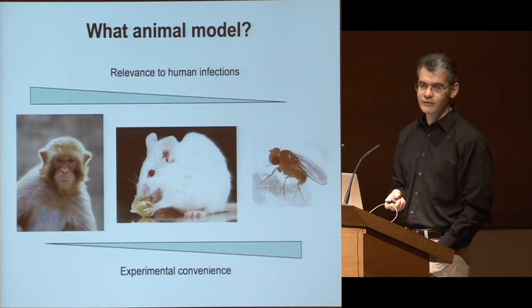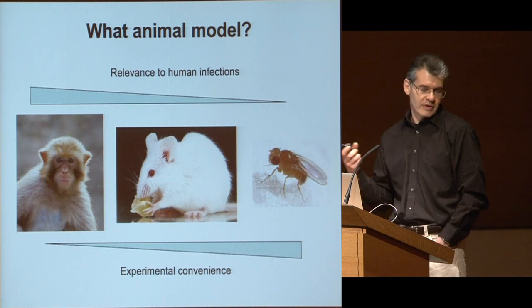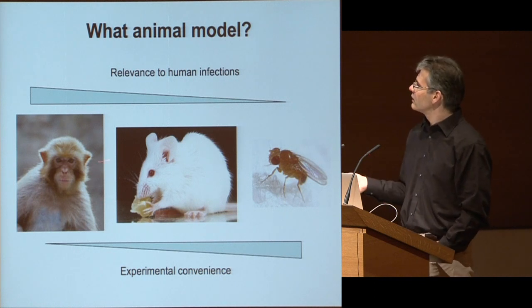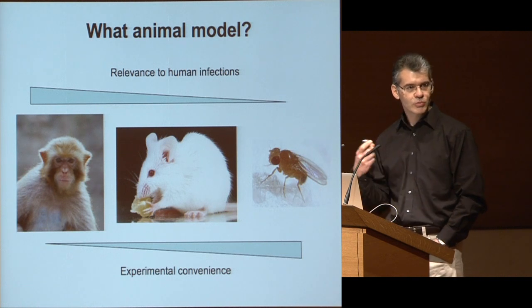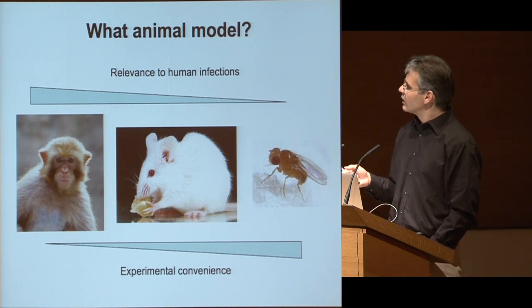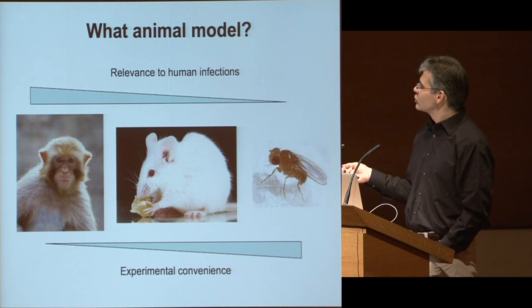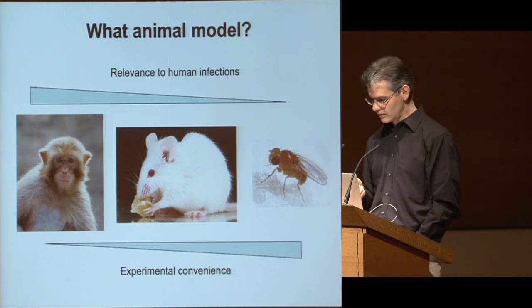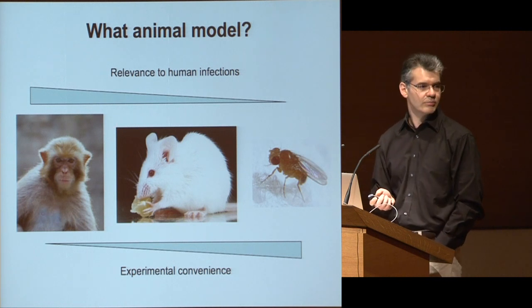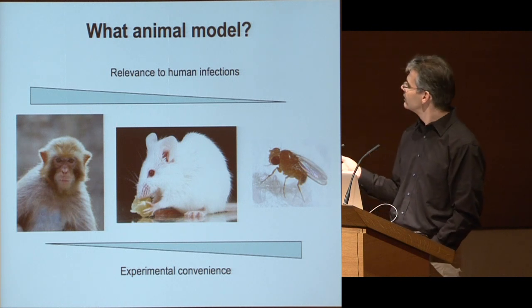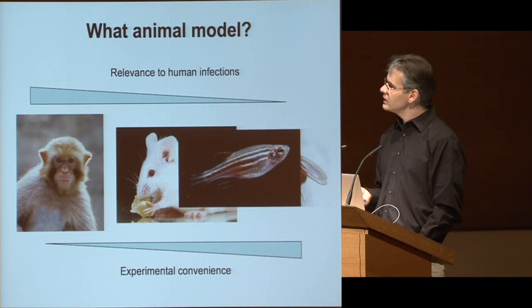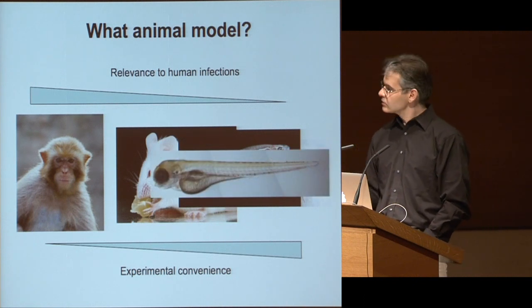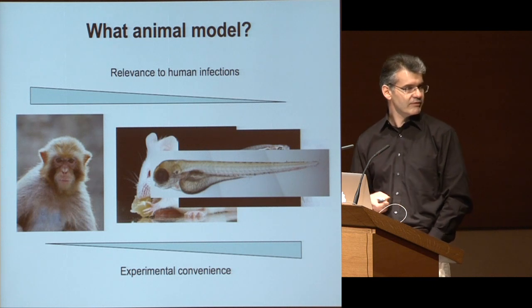We have a choice of animal models, and each comes with trade-offs. Some are more relevant to the human situation but at the cost of fewer animals, much more difficult to use, more costly, and ethical issues. So you have this whole range of possibilities, and I would like to convince you that there is, among those classical organisms — where mice are king — a middle way, which is the zebrafish. And actually, it's not the adult zebrafish; I'm going to show you work done only with zebrafish larvae, which have specific advantages.